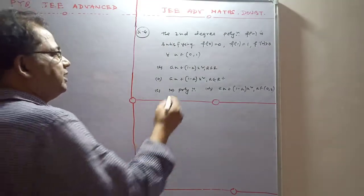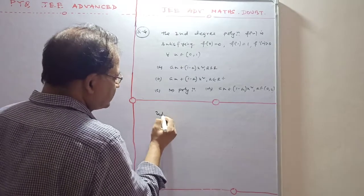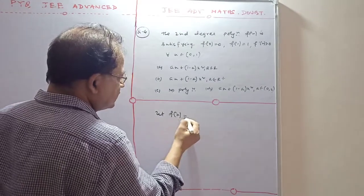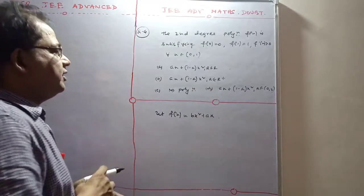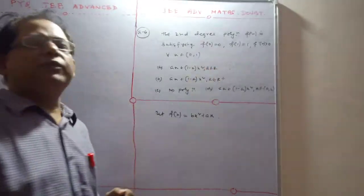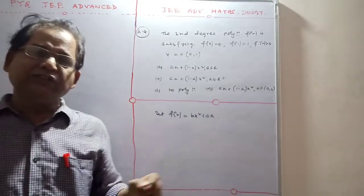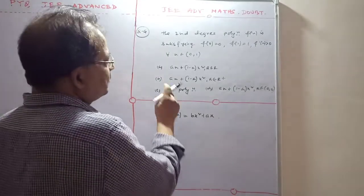Whenever you consider like this, suppose you consider some function of the form bx² + ax. If f(0) = 0, that means the function is bx² + ax.